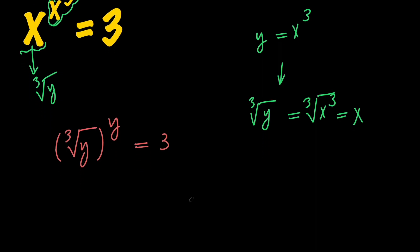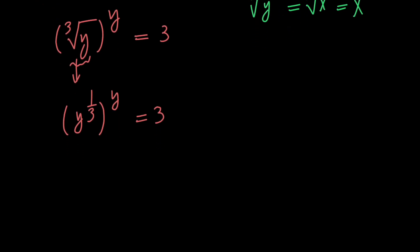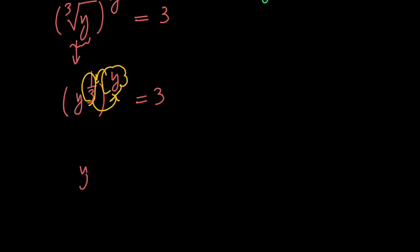So first of all, we can replace the cube root of y with y to the power of 1 third, and then we can bring this in and write this as y to the power of y to the power of 1 third.